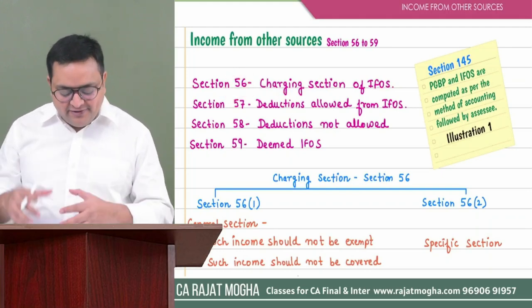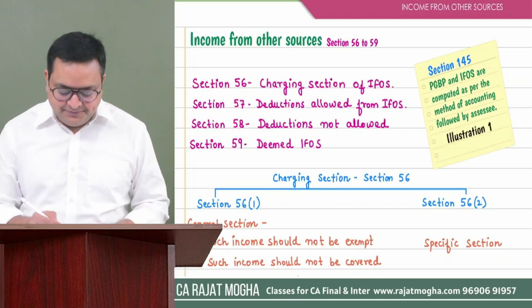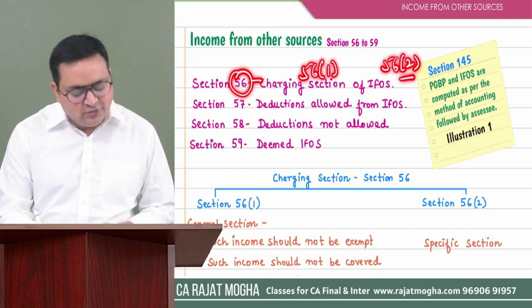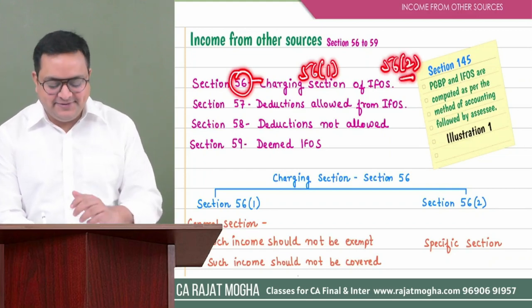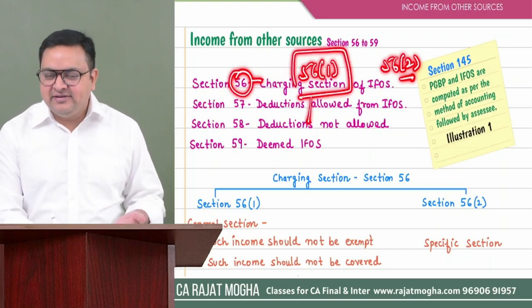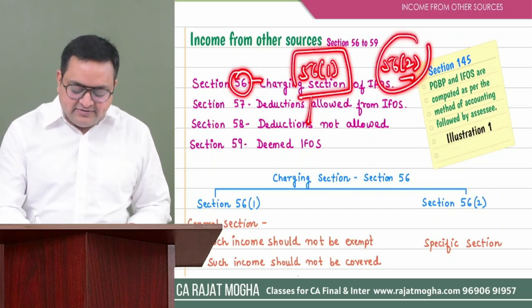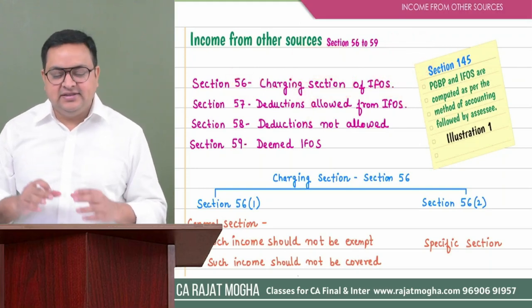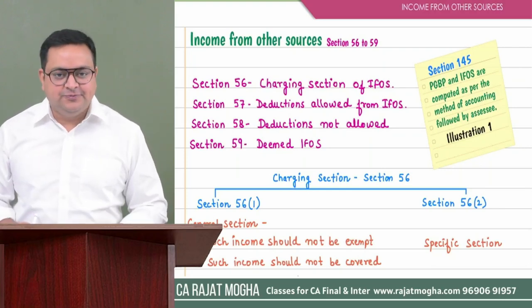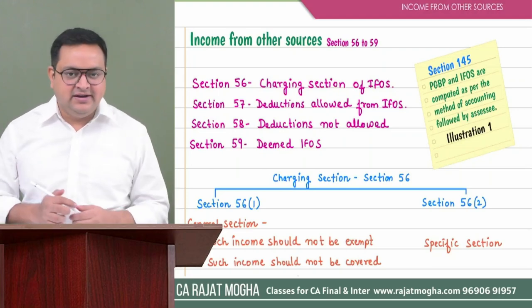Section 56 has two subsections: 56(1) and 56(2), and they are both charging sections. 56(1) is a general charging section — it is general and residuary in nature. Whereas 56(2) is a specific charging section. There are certain incomes which will be specifically covered under IFOS under Section 56(2).